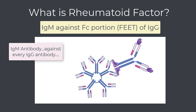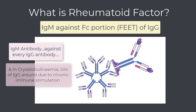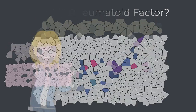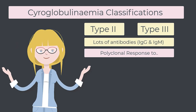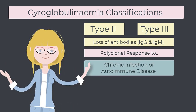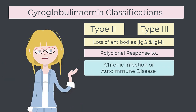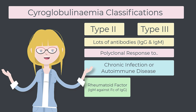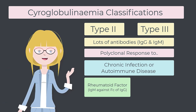The plot thickens. If we are making lots of IgG because we have a chronic infection or autoimmune disease, we have lots of antibodies around. And if we have rheumatoid factor in the mix, we now have an antibody against all of these antibodies — so we have lots of antibodies against antibodies. That's type 2 cryoglobulinemia in a nutshell: lots of IgG because of a connective tissue disease or chronic infection, plus rheumatoid factor — an IgM against those IgGs.